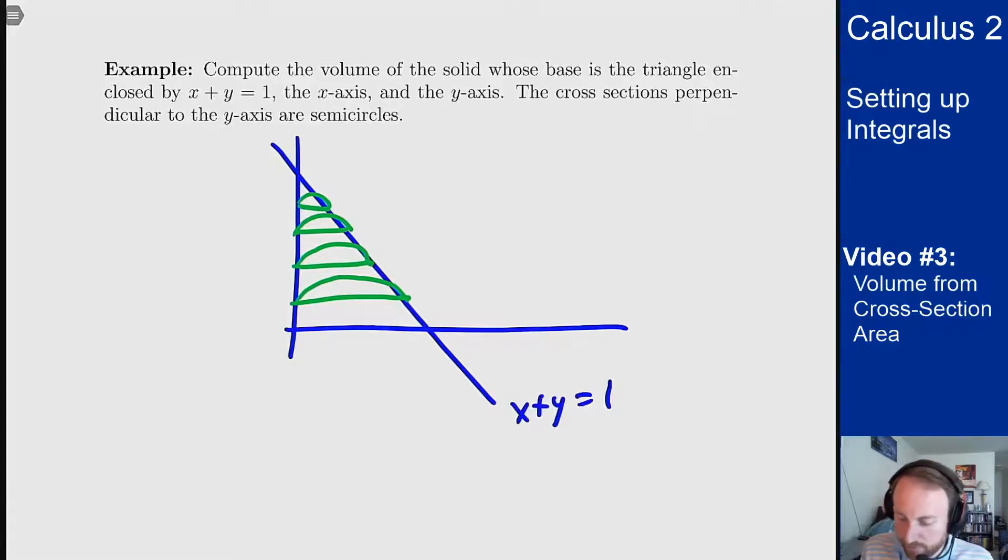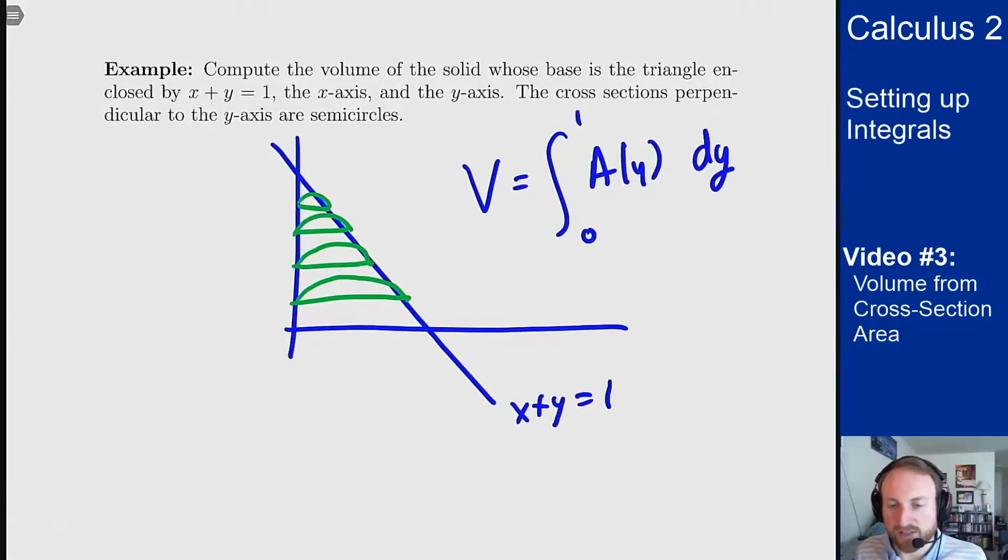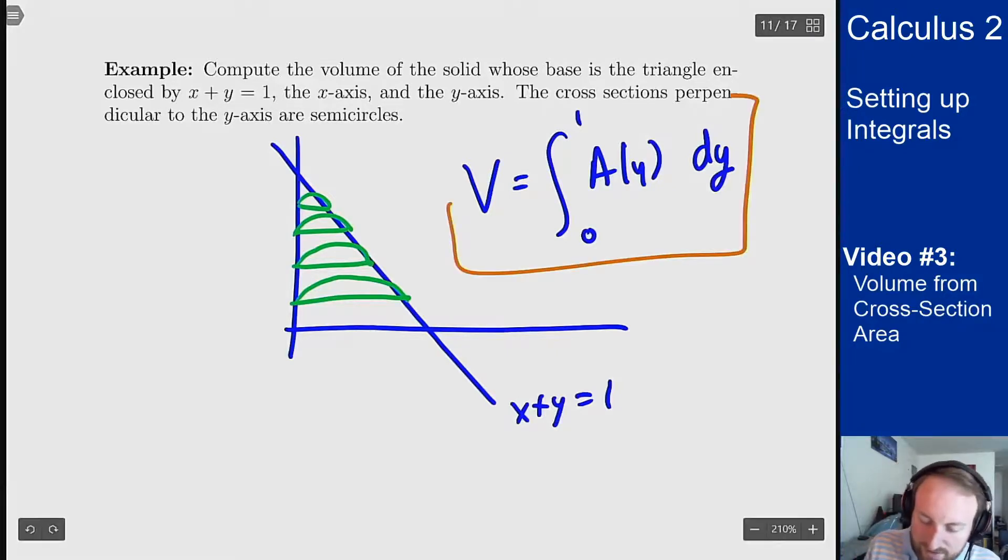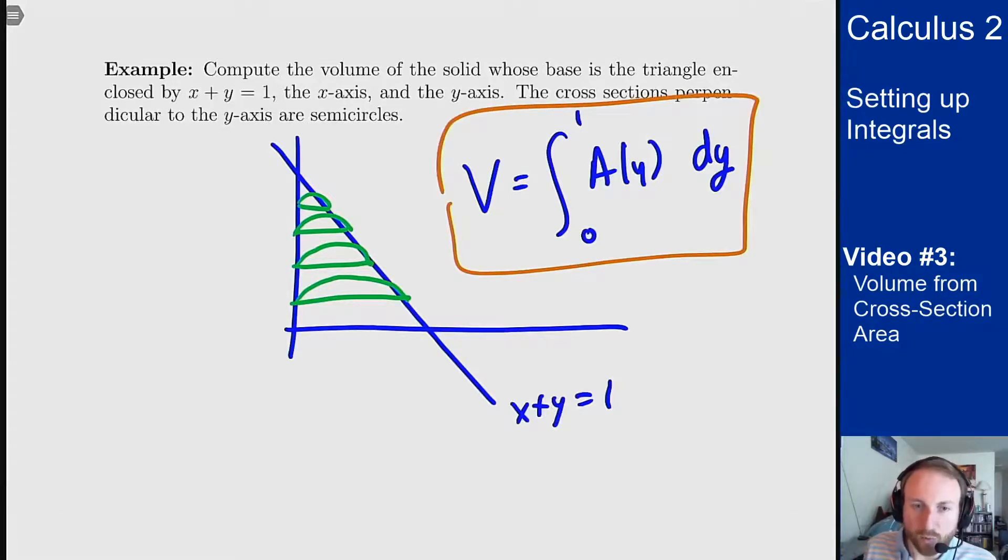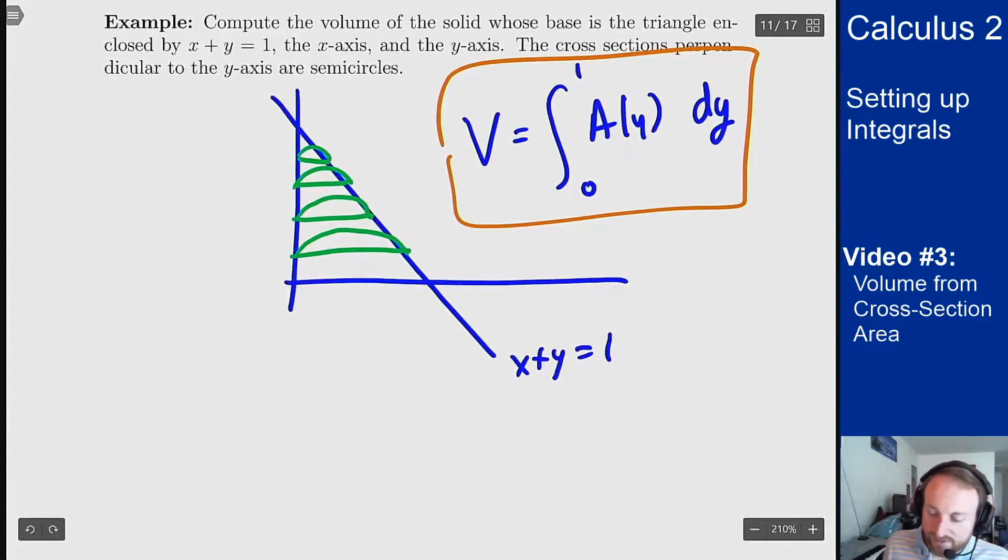To find the volume I'm going to want to integrate from 0 to 1 the cross sectional area at y times dy. Because I have cross sections perpendicular to the y-axis, it's going to be a dy integral. So this is the thing that I need to solve. So to do that I need to know what A of y is.